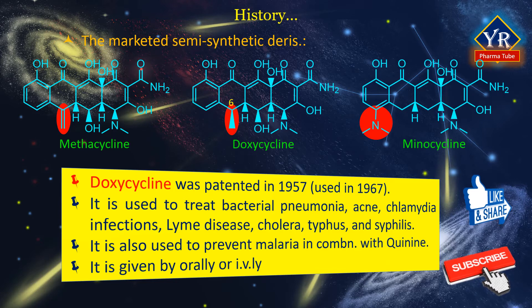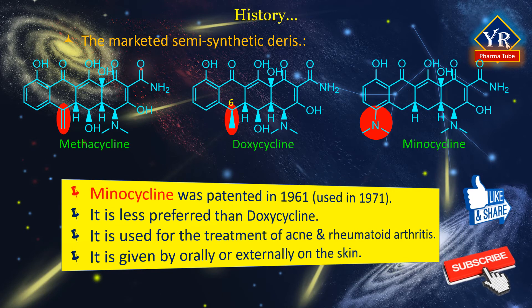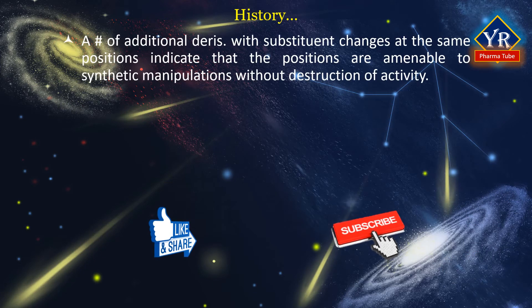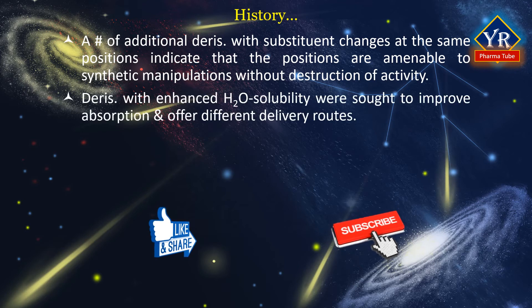Doxycycline may be taken by mouth or by injection into a vein. Minocycline was patented in 1961 and came into commercial use in 1971. It is generally less preferred than doxycycline. It is used for the treatment of acne and rheumatoid arthritis, and is taken by mouth or applied onto the skin. A number of additional analogues have been described as variations with substituent changes at the same positions, indicating these positions are amenable to synthetic manipulations without destroying antibacterial activity. Despite early successes, derivatives with enhanced water solubility were sought to improve absorption and offer different delivery routes.